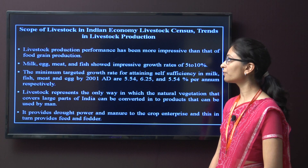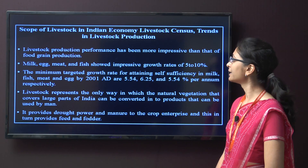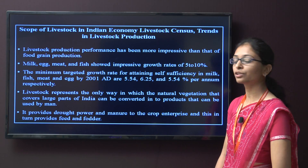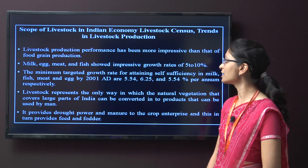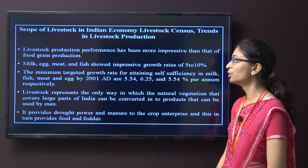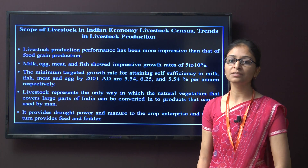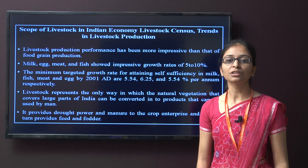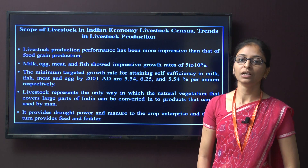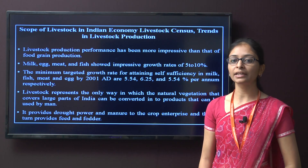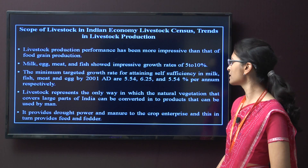First, the scope of livestock in Indian economy, livestock census, and trends in livestock production. The livestock production performance has been more impressive than that of food grain production. Milk, egg, fish, and meat showed impressive growth rates of about 5 to 10%. The minimum targeted growth rate for attaining self-sufficiency in milk,